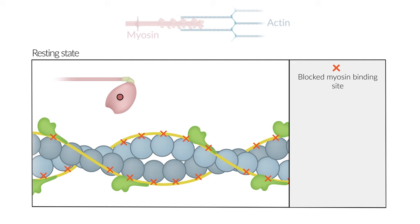The myosin binding site of actin is blocked by tropomyosin, preventing interaction between actin and myosin. The myosin head is in a low-energy position at 45 degrees with one ATP molecule bound to it. Through the hydrolysis of ATP to ADP and phosphate, the myosin head is cocked to a high-energy position at 90 degrees. The myosin binding site remains blocked.